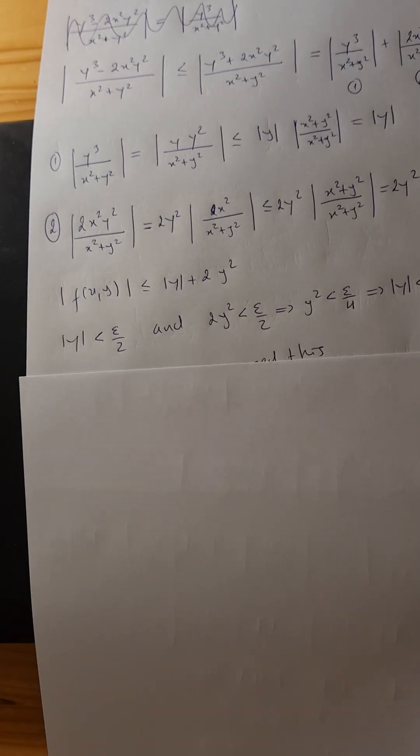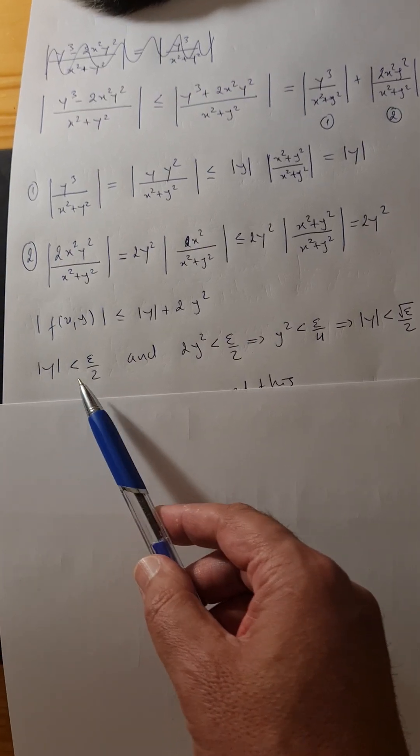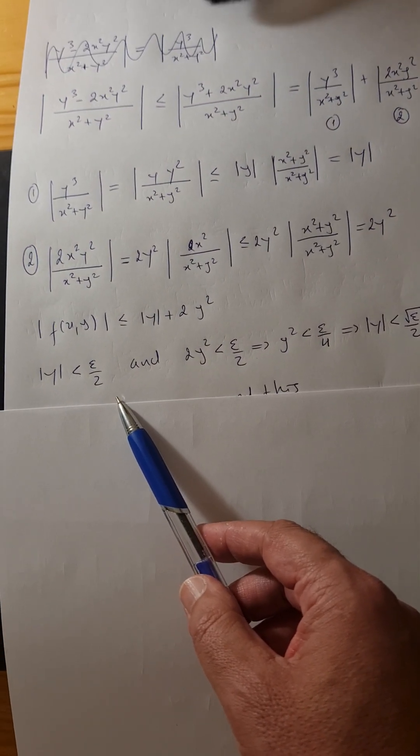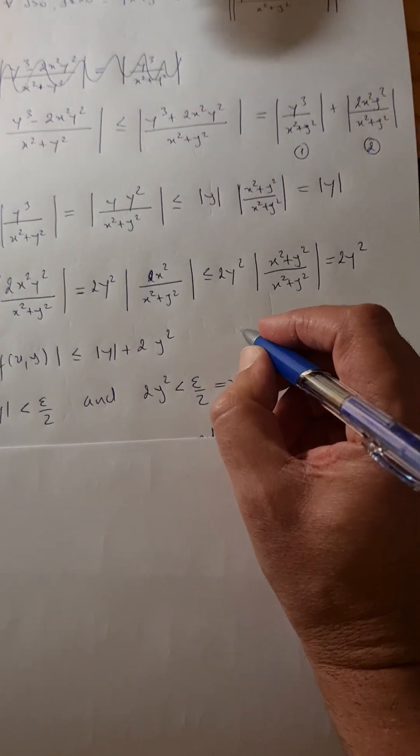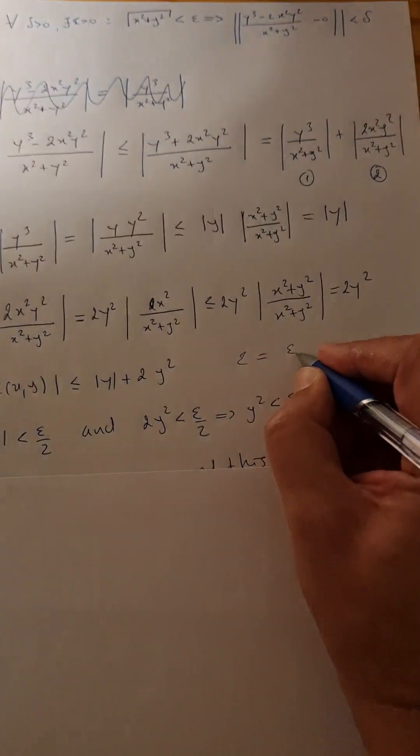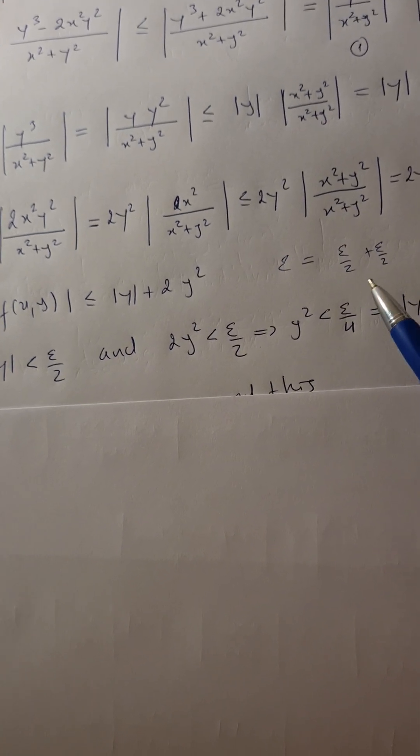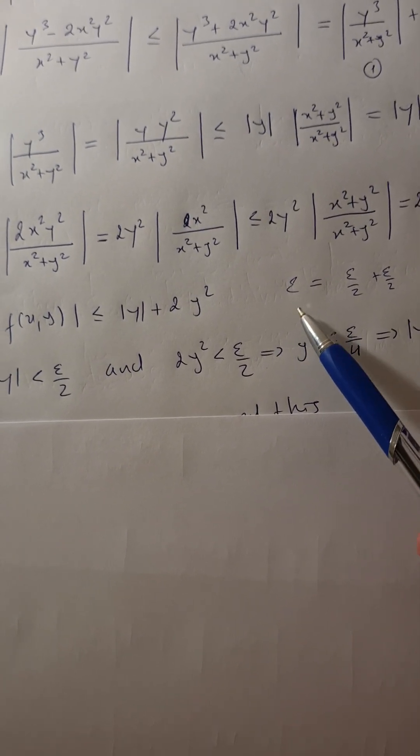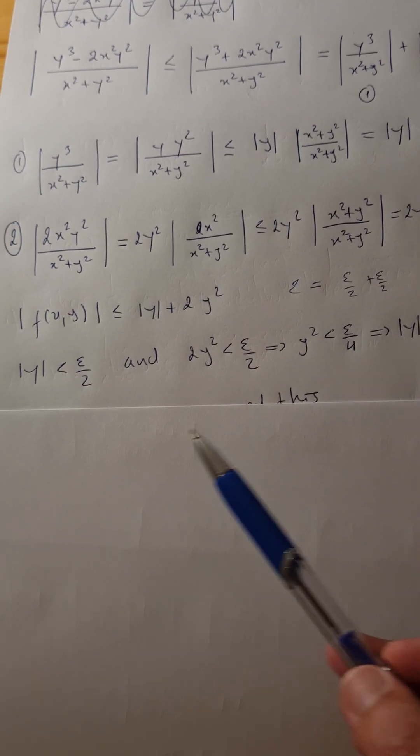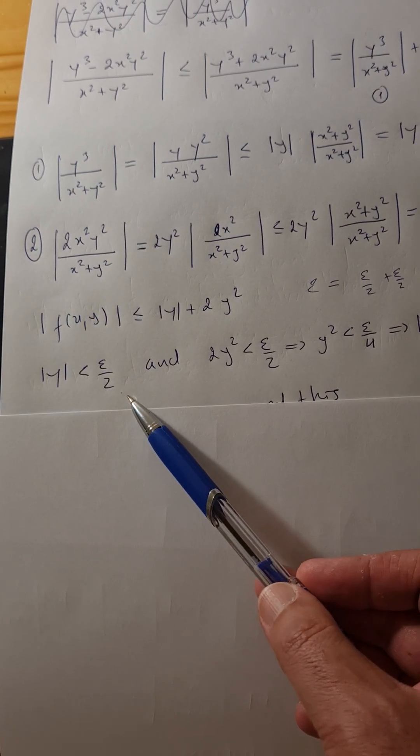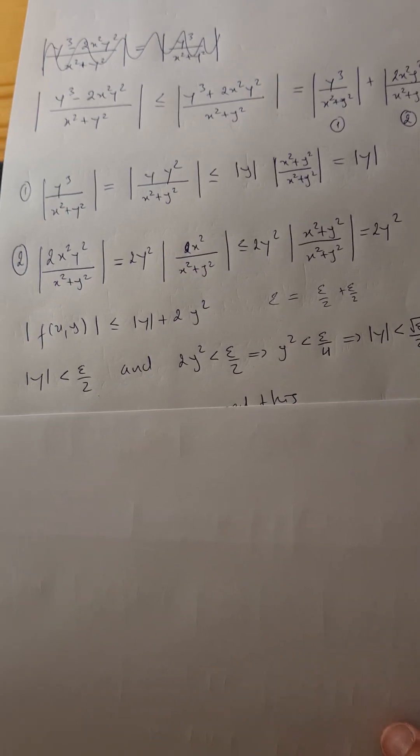So this will be the majorization. We need that y to be smaller than epsilon over 2. So we are going to do this. In addition, because we need only one epsilon, we are going to break epsilon into two parts. We need one to be smaller than this one and the second one to be smaller than this one. Small calculations, we get this.